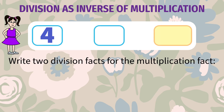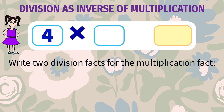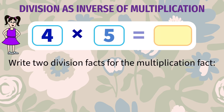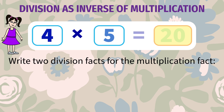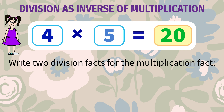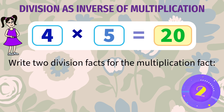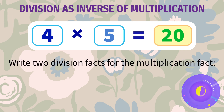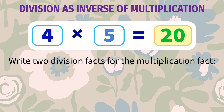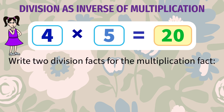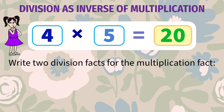How do you get two division facts from one multiplication fact? Let's learn! Write two division facts for 4 into 5 equals 20. If you divide the product by the multiplier, you get the multiplicand.